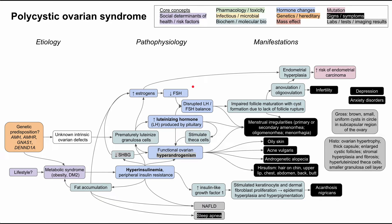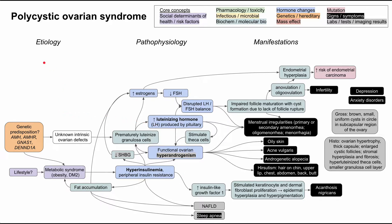This is a mechanism of disease map for polycystic ovarian syndrome, also called PCOS. I'll be talking about the etiology of PCOS, the pathophysiology of PCOS, as well as how PCOS manifests in the clinical findings. This one's a bit tricky because the etiology and pathophysiology of polycystic ovarian syndrome is not completely understood, so I'll be talking about what we know so far and some of the key trends that we've been able to identify in terms of what causes this disease.